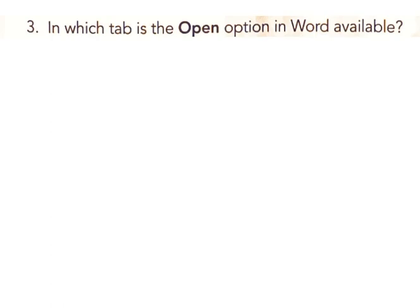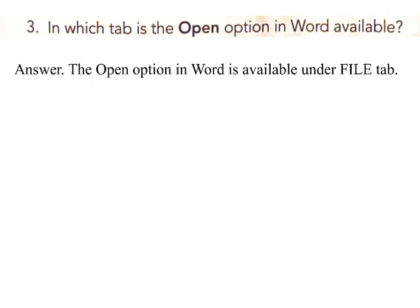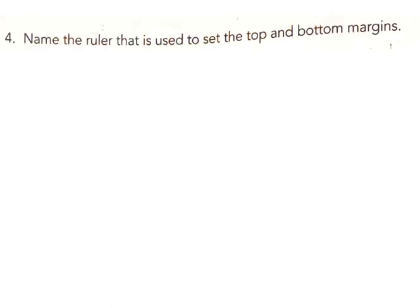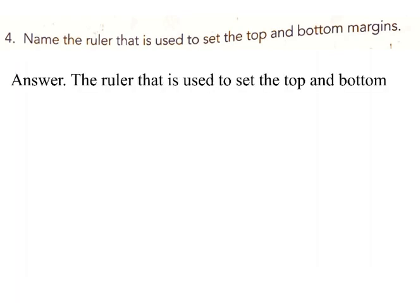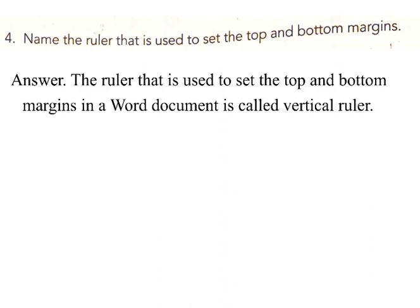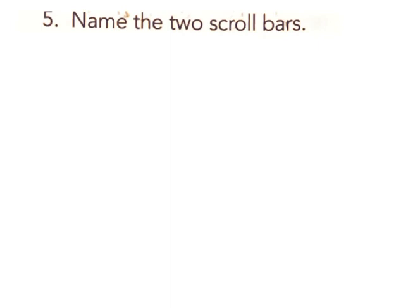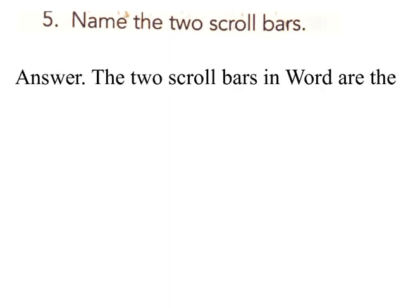C) open: the keyboard shortcut for open is Control + O. Three: in which tab is the open option in Word available? Answer: the open option in Word is available under the file tab. Four: name the ruler that is used to set the top and bottom margins. Answer: the ruler used to set the top and bottom margins in a Word document is called the vertical ruler.